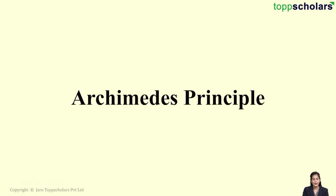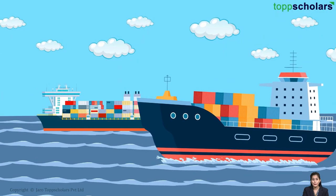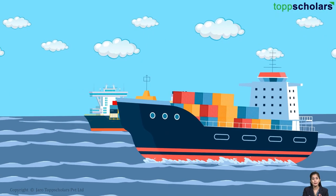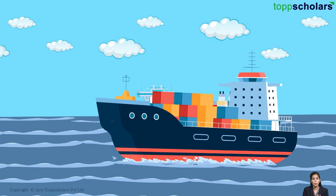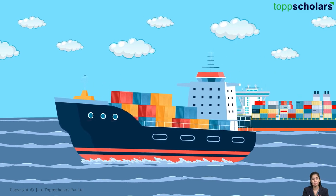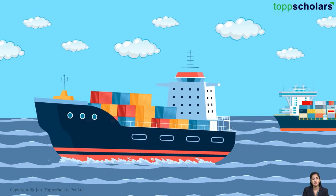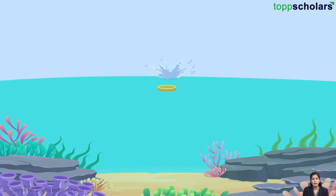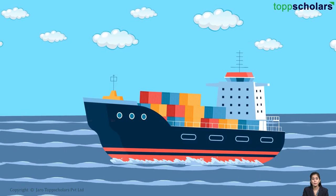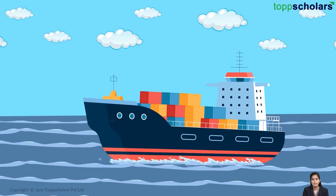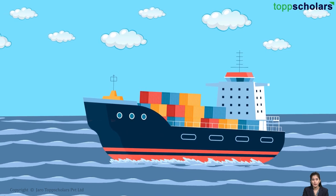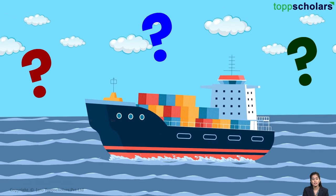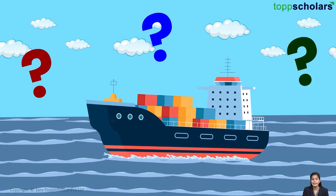Hello students! We all know that the biggest ships in the world weigh hundreds and thousands of tons. Have you ever wondered why a metal coin sinks in the water, but large ships made up of the same metal do not? What is it that stops the ship from sinking?